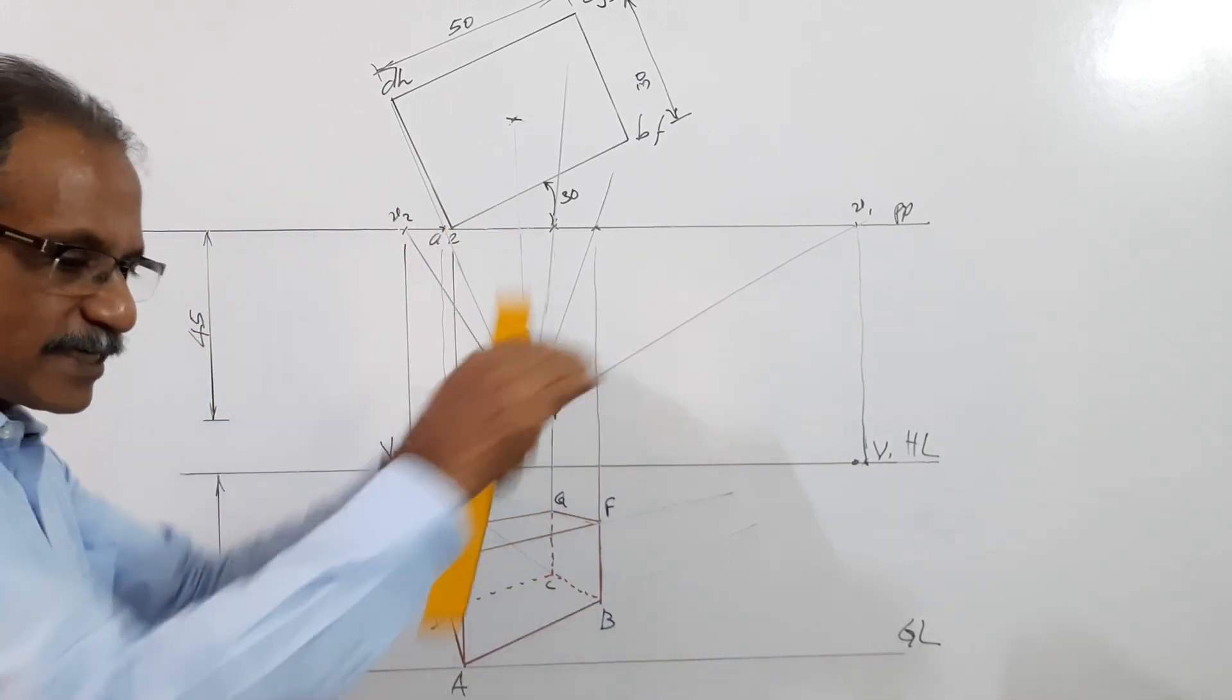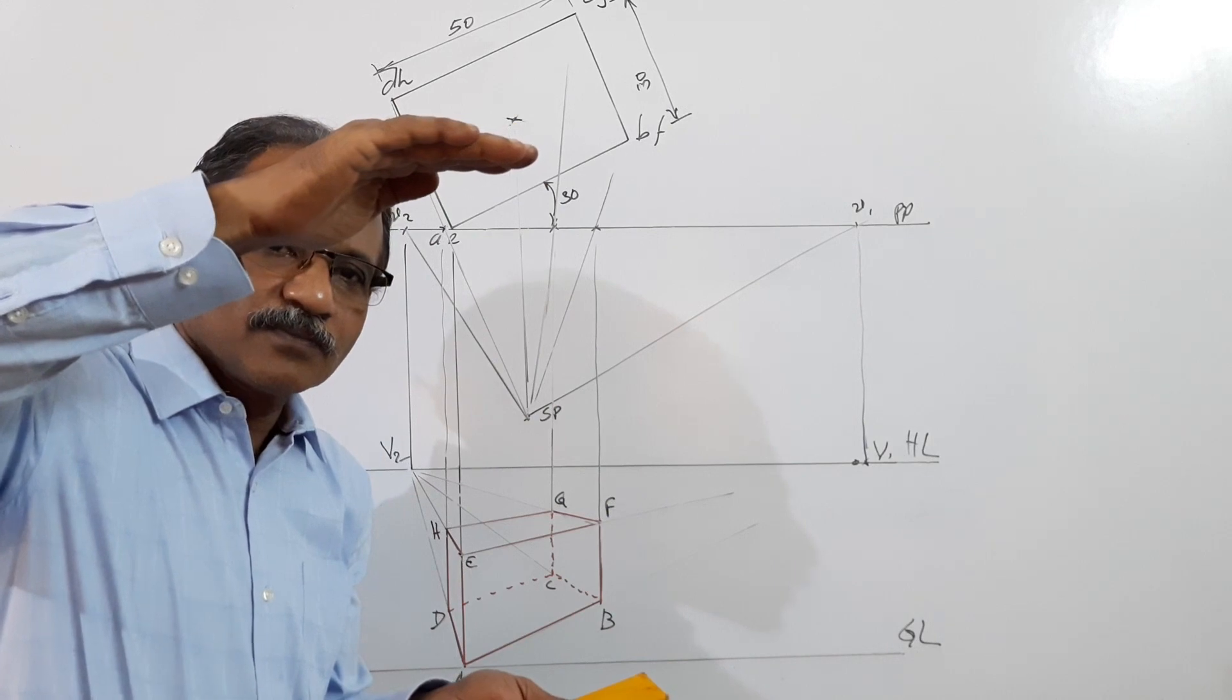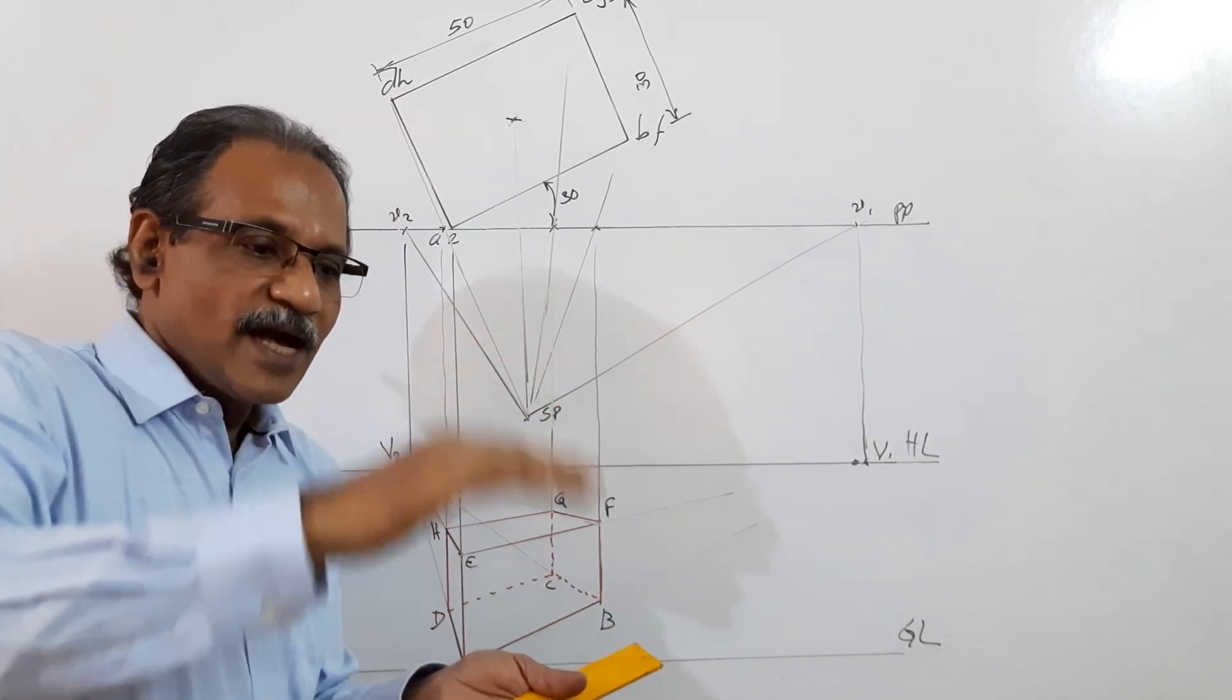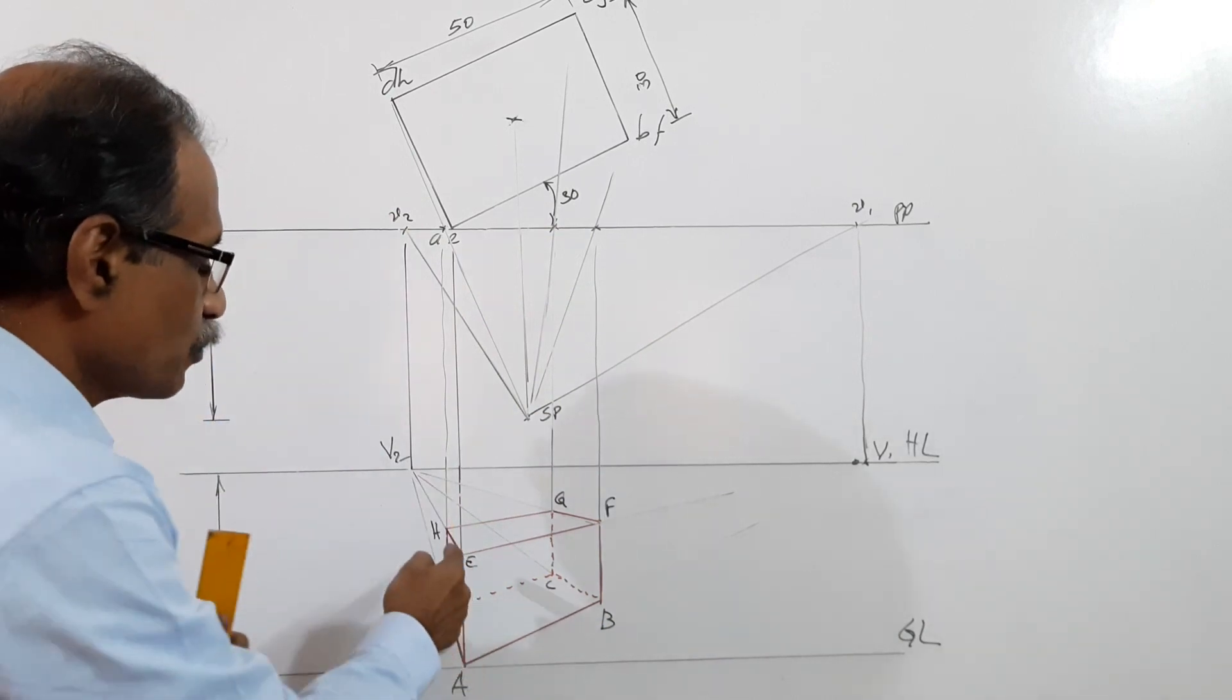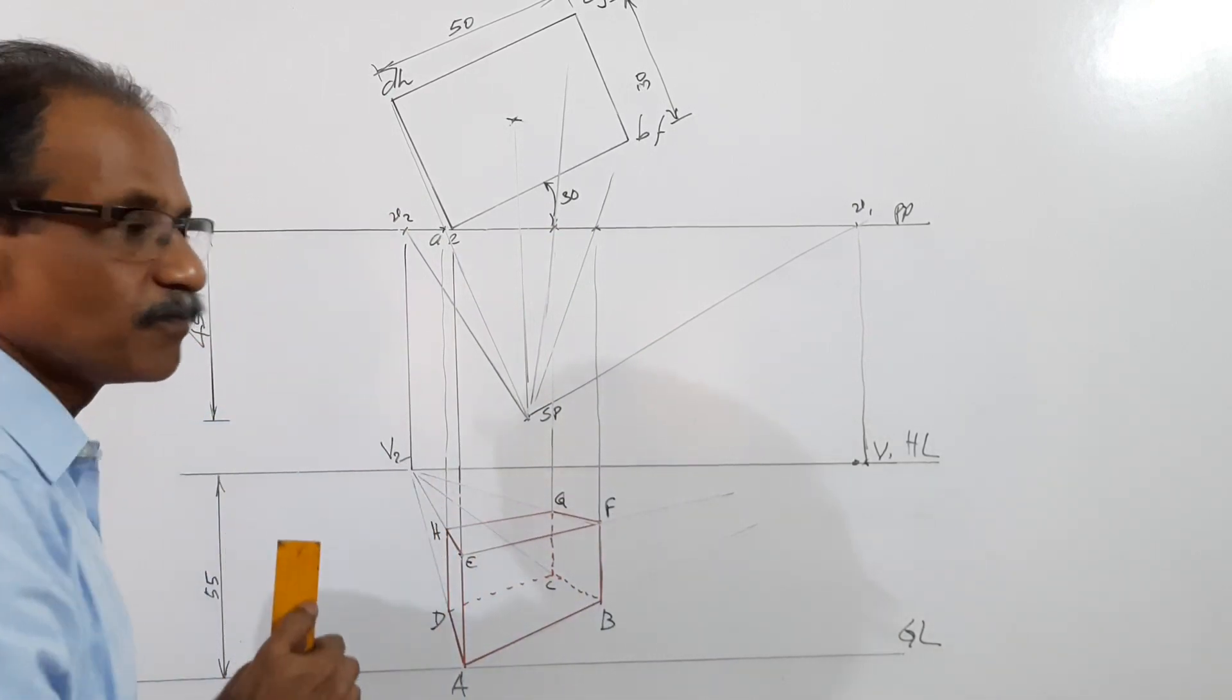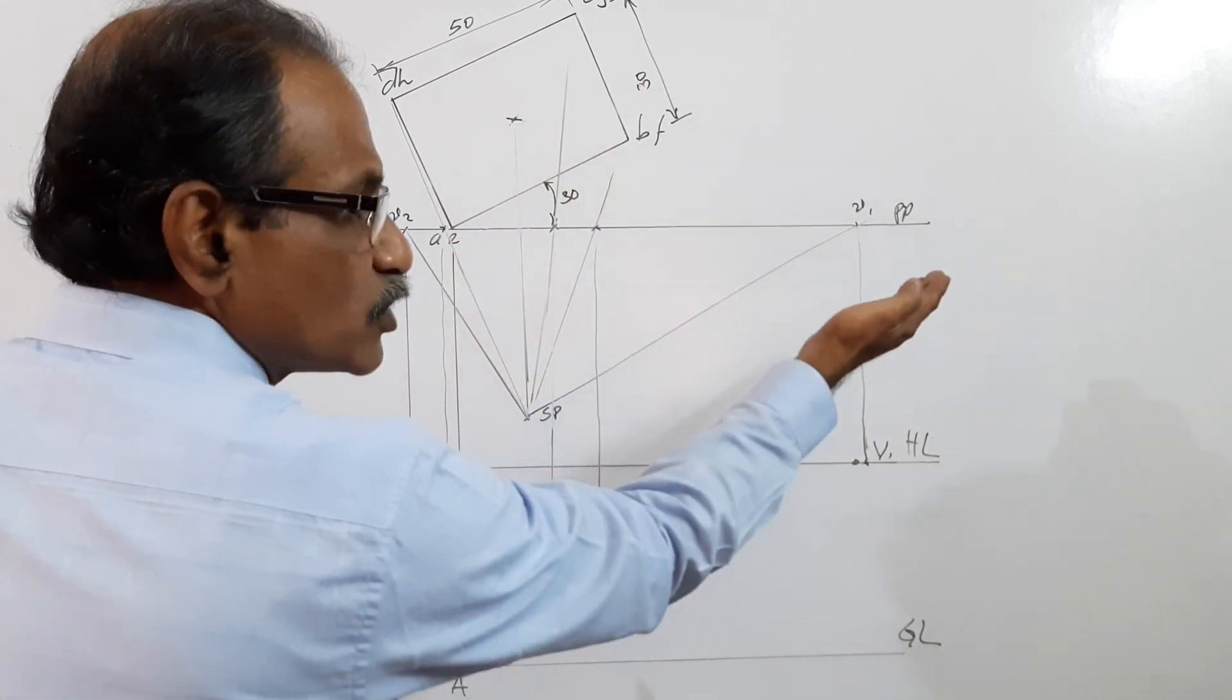Now the box is 25 mm tall and the observer is 55 mm tall. The observer will always see the top. Top is called EFGH. Now AE is nearer to you.